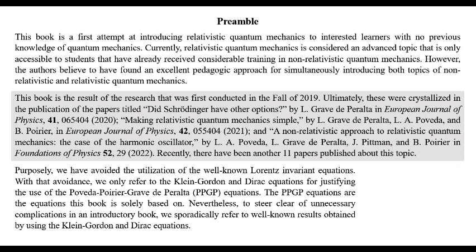Ultimately, these were crystallized in the publication of the papers titled: 'Did Schrödinger Have Other Options?' by L. Grave de Peralta, in European Journal of Physics, 2020; and 'Making Relativistic Quantum Mechanics Simple,' by L. Grave de Peralta, L. Povetta, and B. Poirier, in European Journal of Physics, 2021.